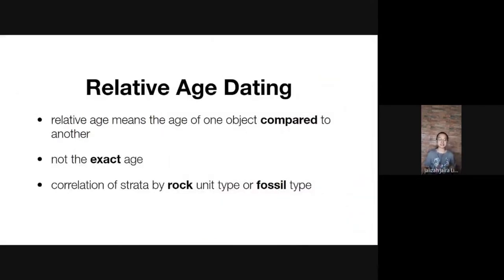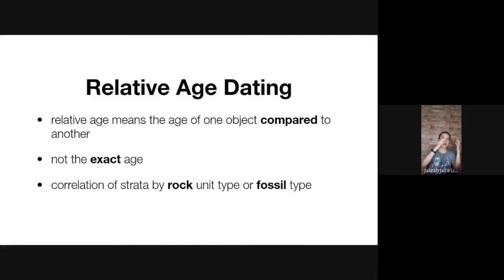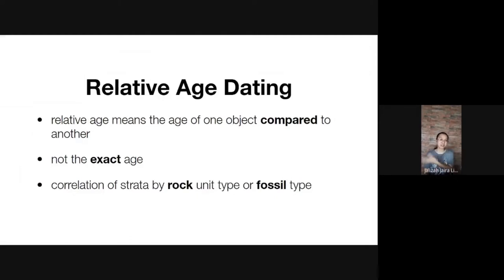This brings us to relative age dating — understanding the age of objects compared to another object. Here we compare layers of rock with other rock layers. It may not tell the exact age, but we can correlate rock layers based on the rock type or the fossils found in the sedimentary layers.